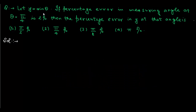Let y = sin θ. If the percentage error in measuring angle θ at θ = π/4 is 2%, then the percentage error in y at that angle is what? Out of the given choices, you have to find which is the correct option. What is given: y = sin θ.